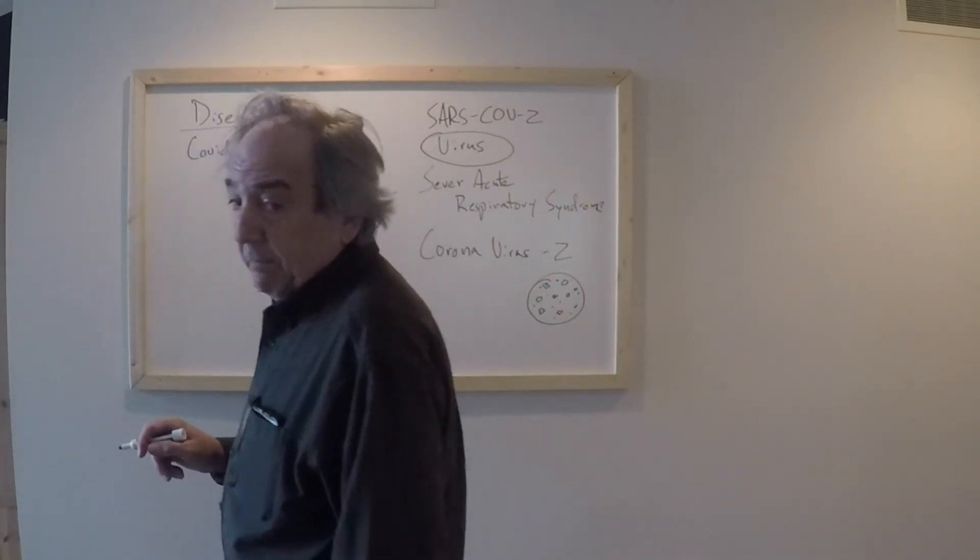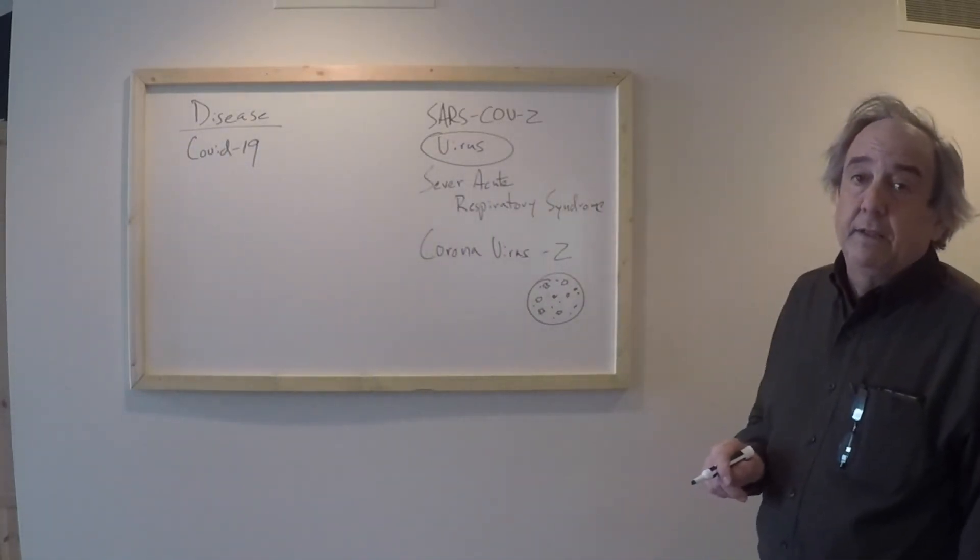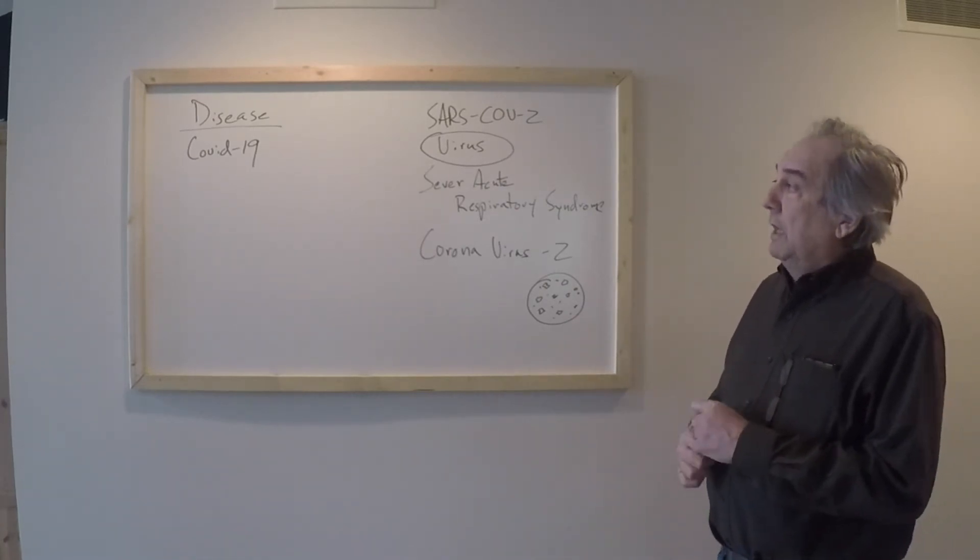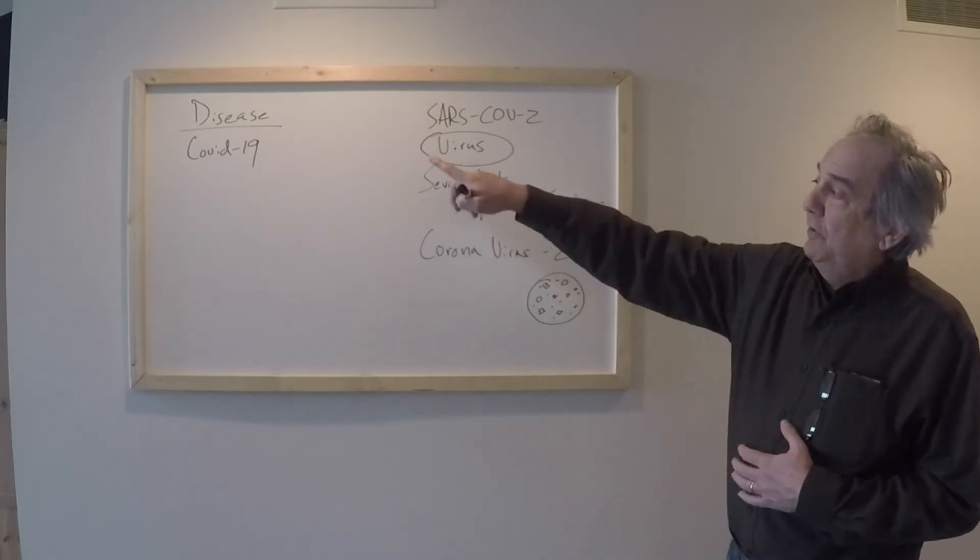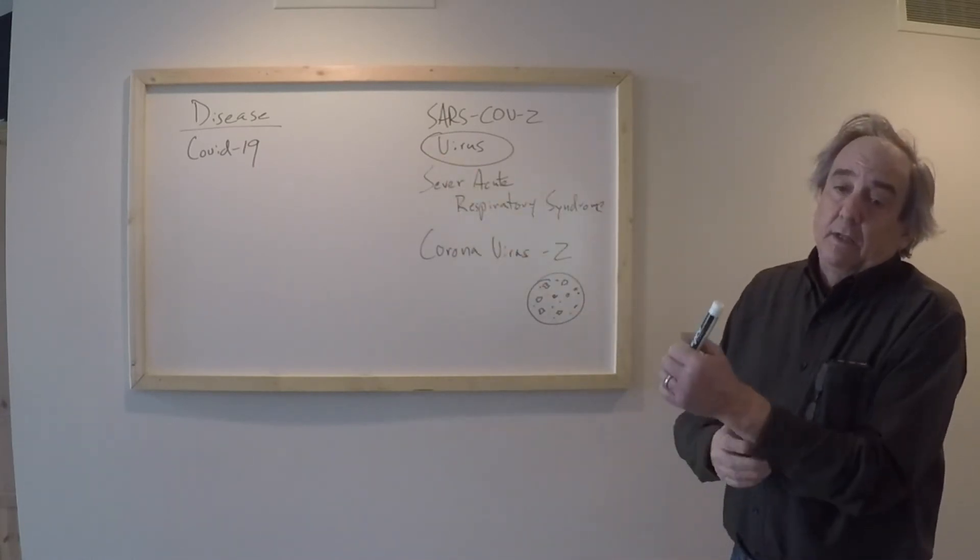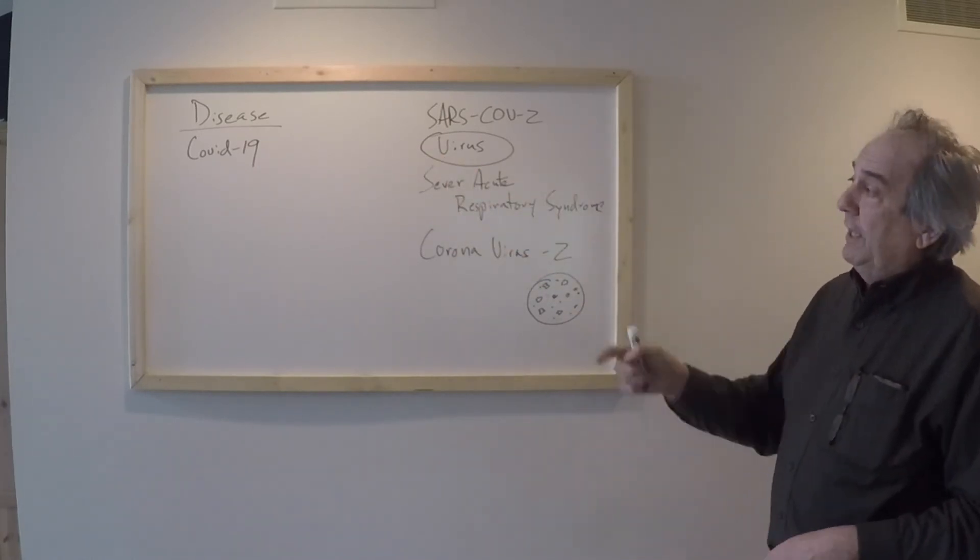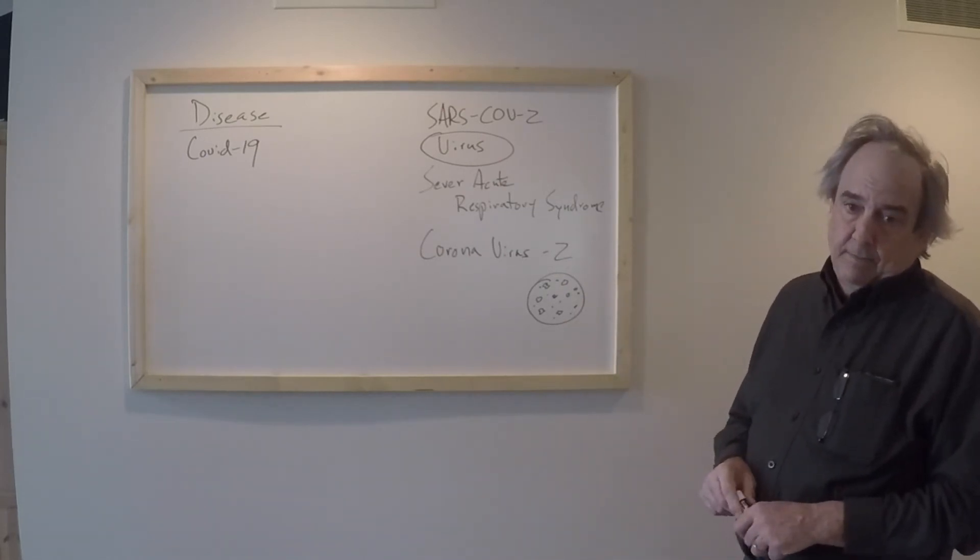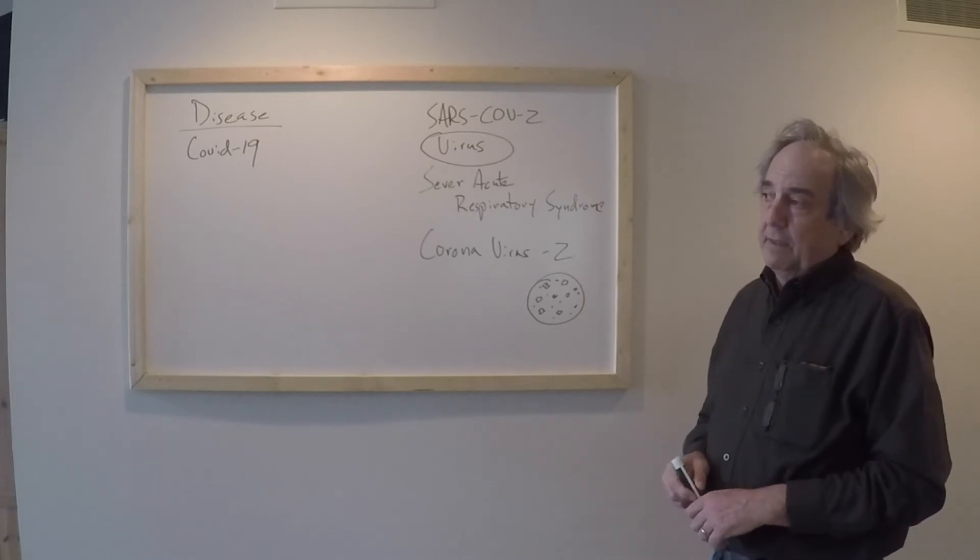The World Health Organization has a whole set of protocols about what you can name these things and how you name diseases. Among the protocols for naming a disease is that you do not give it a place name, among other things.